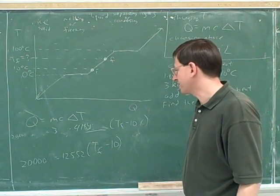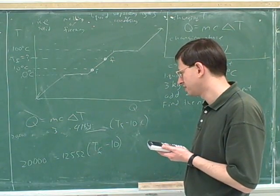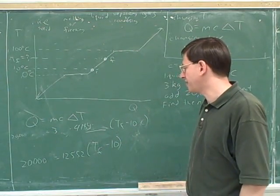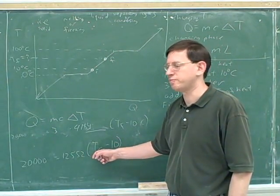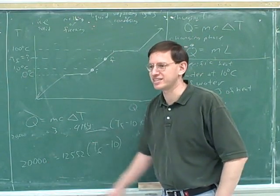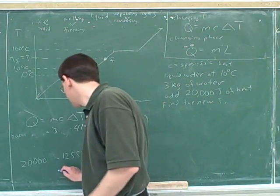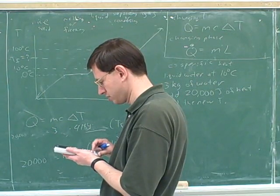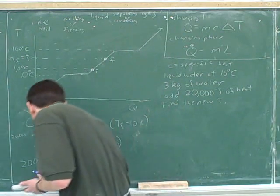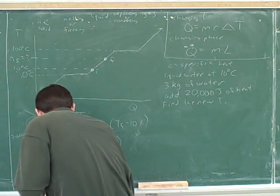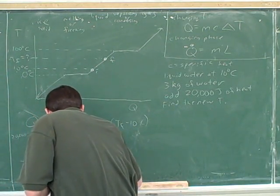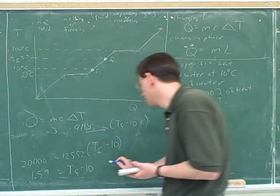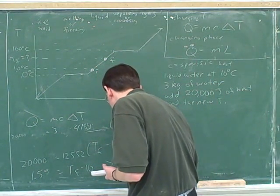All right, what's the next thing we can do to simplify the right-hand side? Divide both sides by 12.5. Okay, good. Actually, that's better than what I was going to do. I was going to use the distributive law and multiply it by 12. But actually, it's better just to divide both sides. That'll get rid of that. All right, so what do we get when we do that? 1.59 equals... Okay, good.